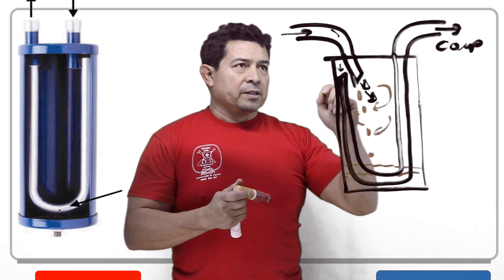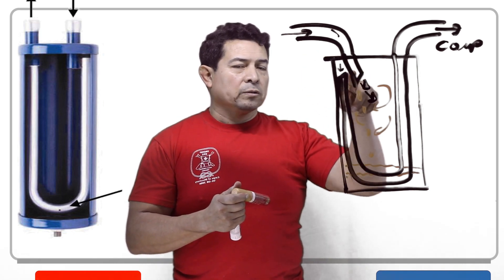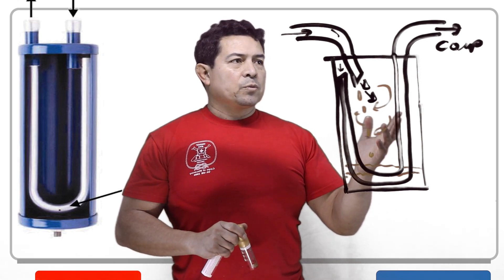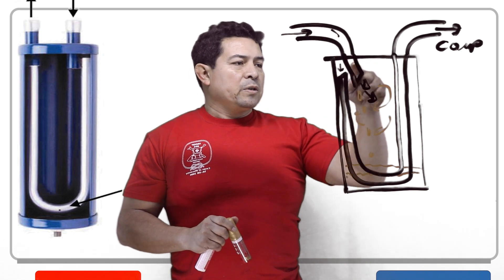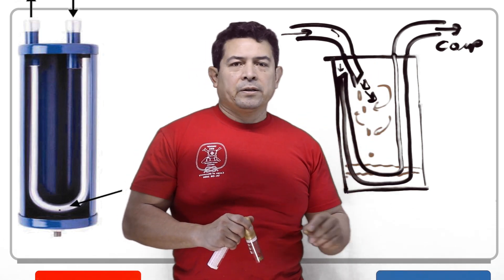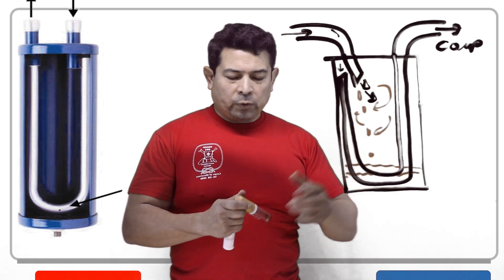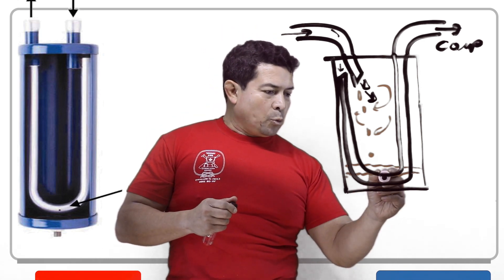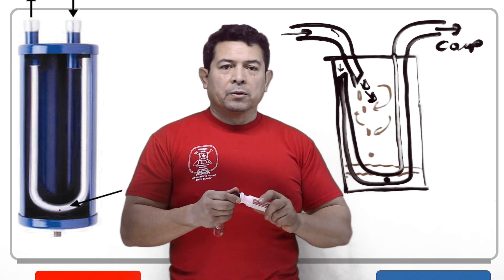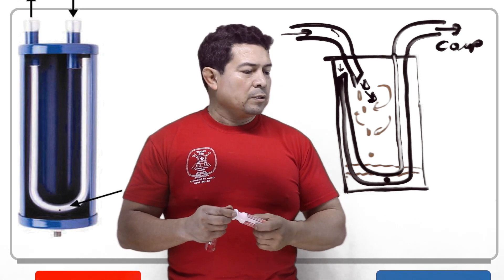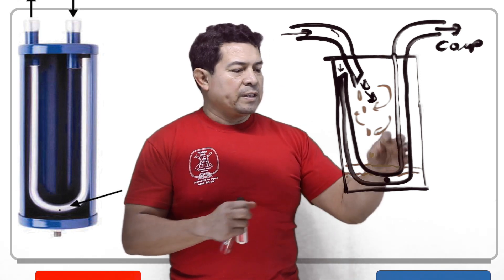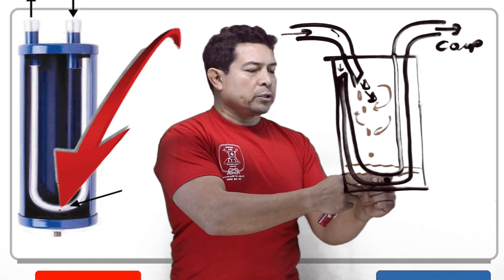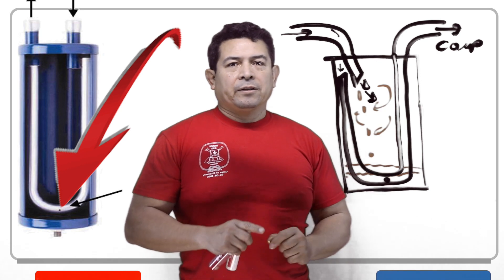Now, the problem with this is that oil always travels with the refrigerant — you can't help that, that's just what happens. When oil comes through here, the little droplets are going to collect down on the bottom. So what they do is they have placed a small port, a small opening, right there. So if there is any oil or liquid refrigerant in here, it's going to be sucked in through this little port and it's going to be going back out to the compressor.